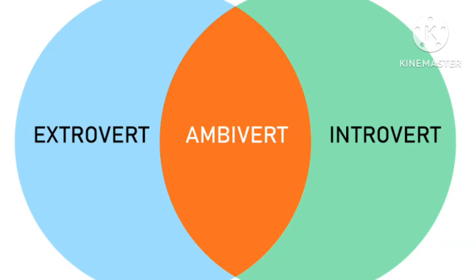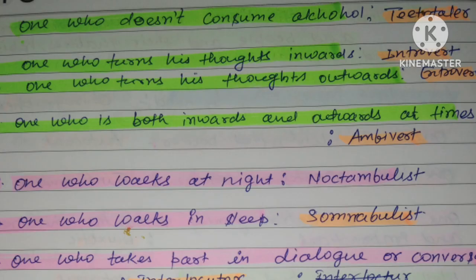So an ambivert is a person who can be shy at times and confident at other times — sometimes uncomfortable meeting new people, sometimes very comfortable. Since 'ambi' means both and 'vert' means turn, a person turned both inward and outward is called an ambivert.